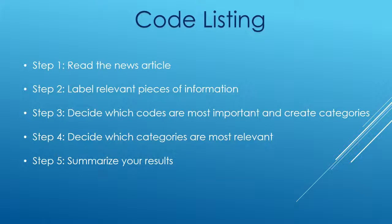In terms of code listing, these are all the steps that I followed to analyze this news article. Step one was I took this news article and I read it completely. In step two, I read it again, and this time I labeled relevant pieces of information. As I was reading, I was underlining, putting things into circles, just looking at anything that was important to me, that came out, that surprised me — I just wanted to find out that kind of information.